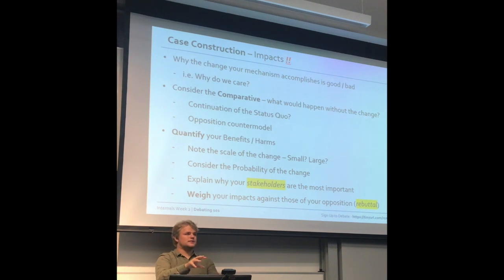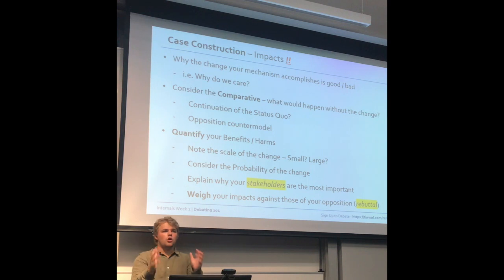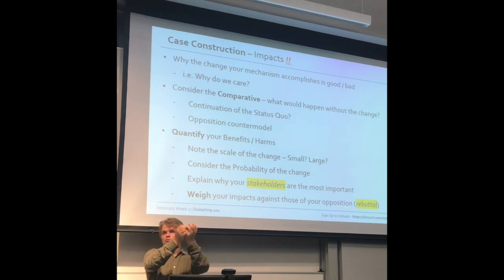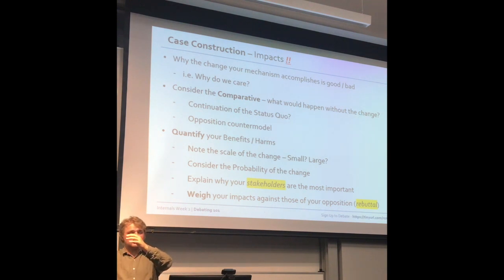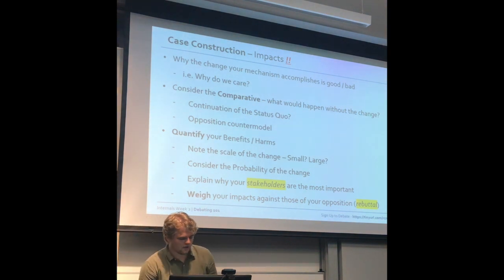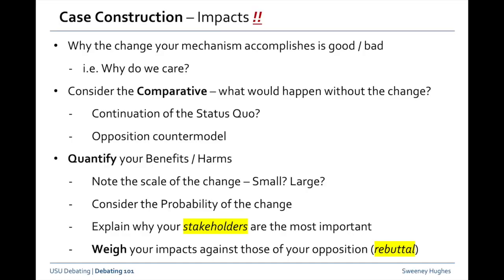Comparatives don't have to just be against the status quo. If the opposition have run a counter model, you say the world we get fundamentally looks like this, which is far preferable to the opposition's world under their counter model. Similarly, when running through impact, it's important that you quantify your benefits and harms — you can note the scale of the change you've actually accomplished and make sure you mechanistically prove you get that change.